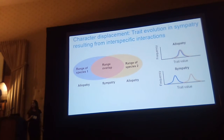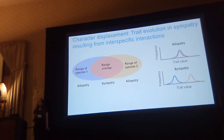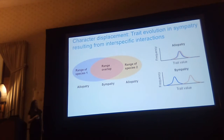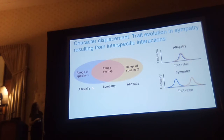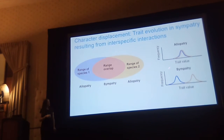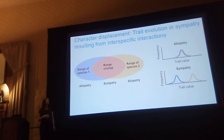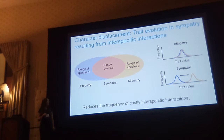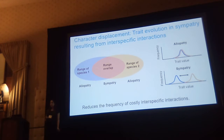Character displacement describes trait evolution in sympatry that results from selection to avoid costly interspecific interactions. Here I'm showing a hypothetical range map for species one and species two, and they have this area of sympatry. On the right I'm showing through a hypothetical trait how character displacement will look. In allopatry these species have overlapping trait values, and in sympatry these traits have been displaced — shifted away from one another — and this acts to reduce the frequency of costly interspecific interactions.